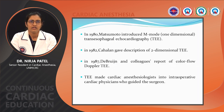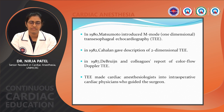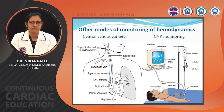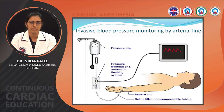In 1980, Sumoto introduced M-mode transoesophageal echocardiography (TEE). In 1982, Cairn gave a description of 2D transoesophageal echocardiography. In 1987, Debrugin and colleagues reported the use of colour flow Doppler using TEE. Transoesophageal echocardiography made cardiac anaesthesiologists the perioperative physician who can guide the surgeon throughout the procedure. Other monitoring methods include central venous pressure monitoring for fluid management in cardiovascular patients, and invasive beat-to-beat blood pressure monitoring for patients undergoing cardiac surgery.